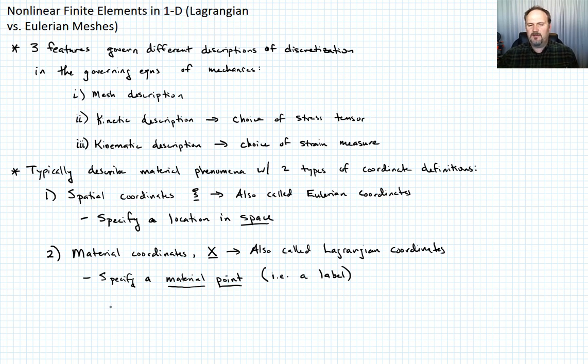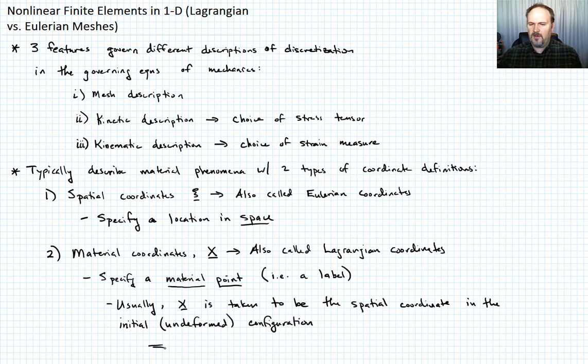Typically, though, X, the material point coordinate, is taken to be whatever the spatial coordinate is in the initial configuration before any deformation has happened. So usually, X is taken to be the spatial coordinate in the initial or undeformed configuration. So at time t equals zero, before anything has happened, the material coordinate labels, X, are equal to their initial spatial locations, xi evaluated at time t equals zero.